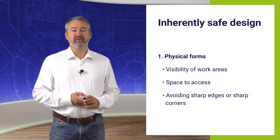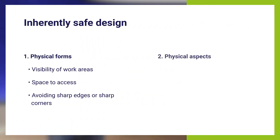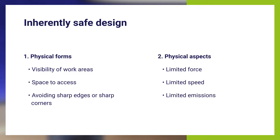Apart from the machine itself, other physical aspects must be considered. For example, forces and velocities should be designed as low as possible in order to avoid hazards. But sources of noise, vibration and radiation should be largely eliminated or reduced. The same applies to hazardous emissions.